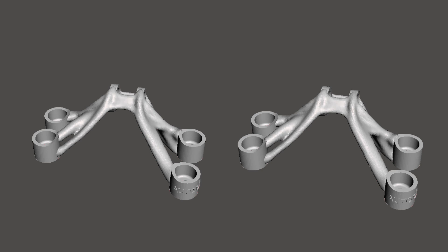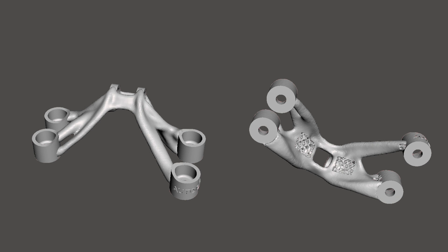Here's another example, an engine bracket for GE. The bracket on the left removed weight by optimizing the shape. The one on the right further removed weight by introducing a lattice.